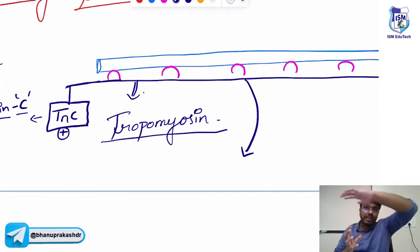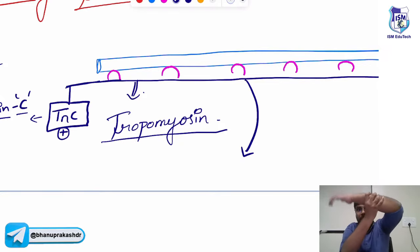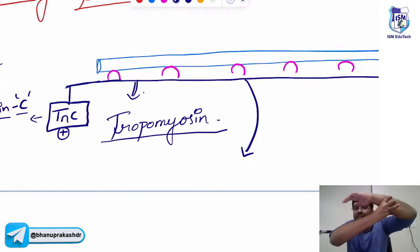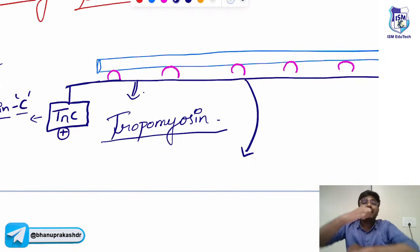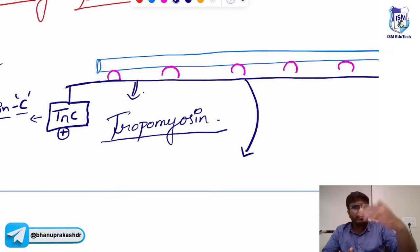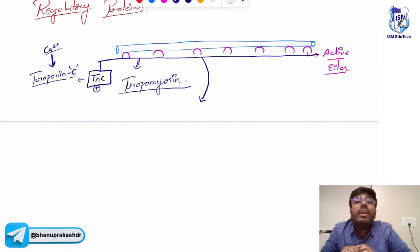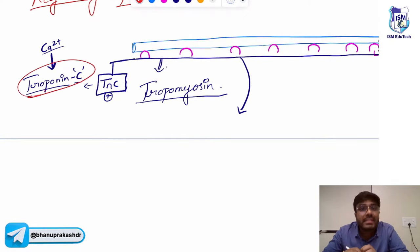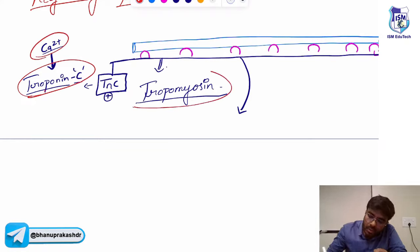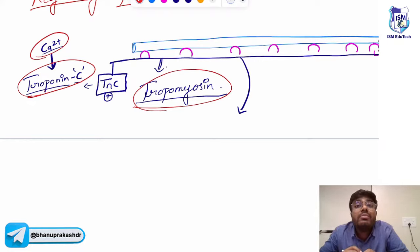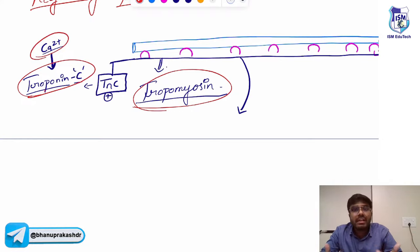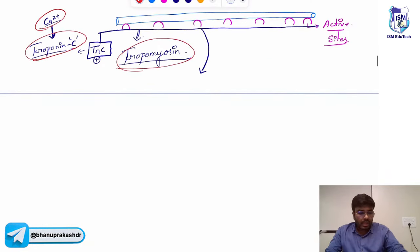When the active sites are exposed, the myosin head — with the help of ADP — will go and bind with the active site, causing the sliding of the actin filament over the myosin filament, causing muscle contraction. Here I am talking about two regulatory proteins: troponin C, which binds with calcium, and tropomyosin, which covers the active sites on actin during the resting phase.